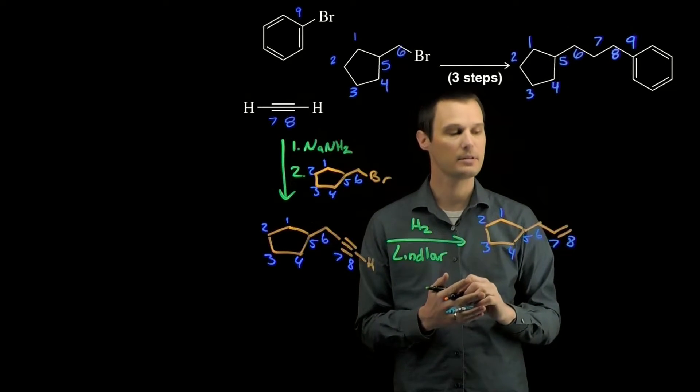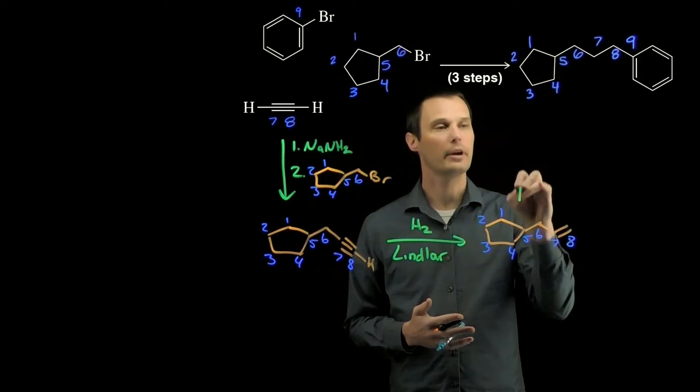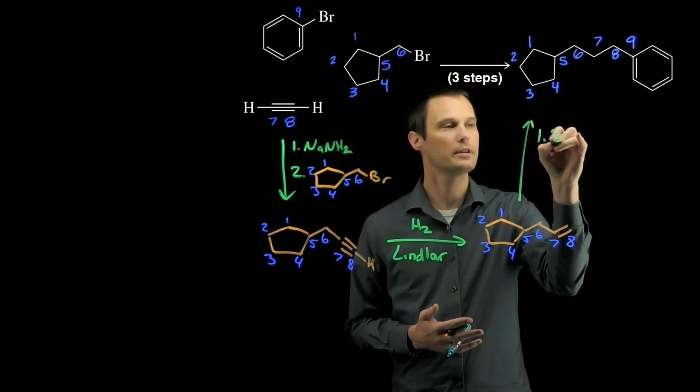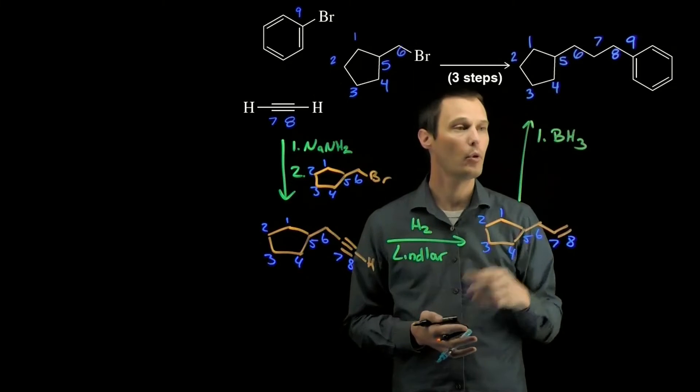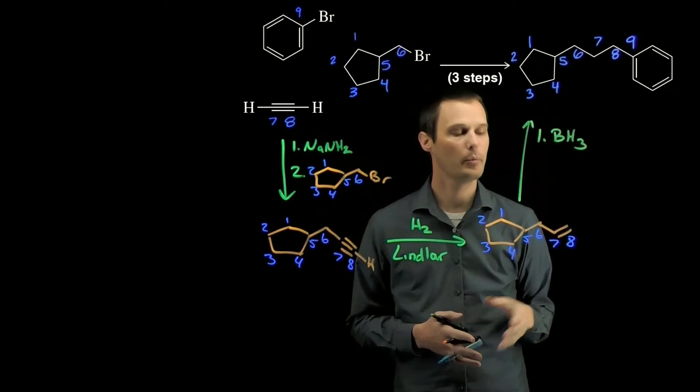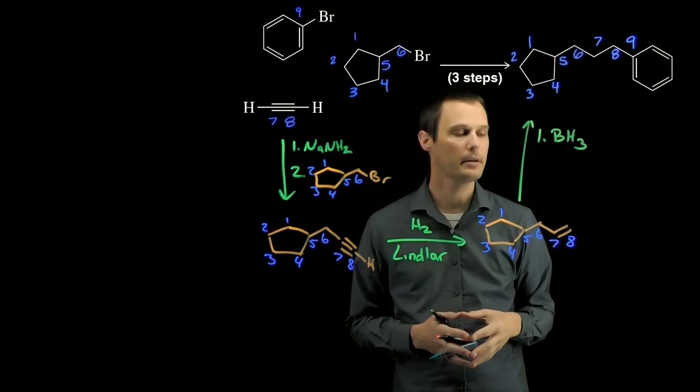And now I can finish out this synthesis by making an organometallic reagent out of carbon number eight. So first I will add borane. Borane will add across the carbon-carbon double bond to put the boron on carbon number eight to make a carbon-boron bond.